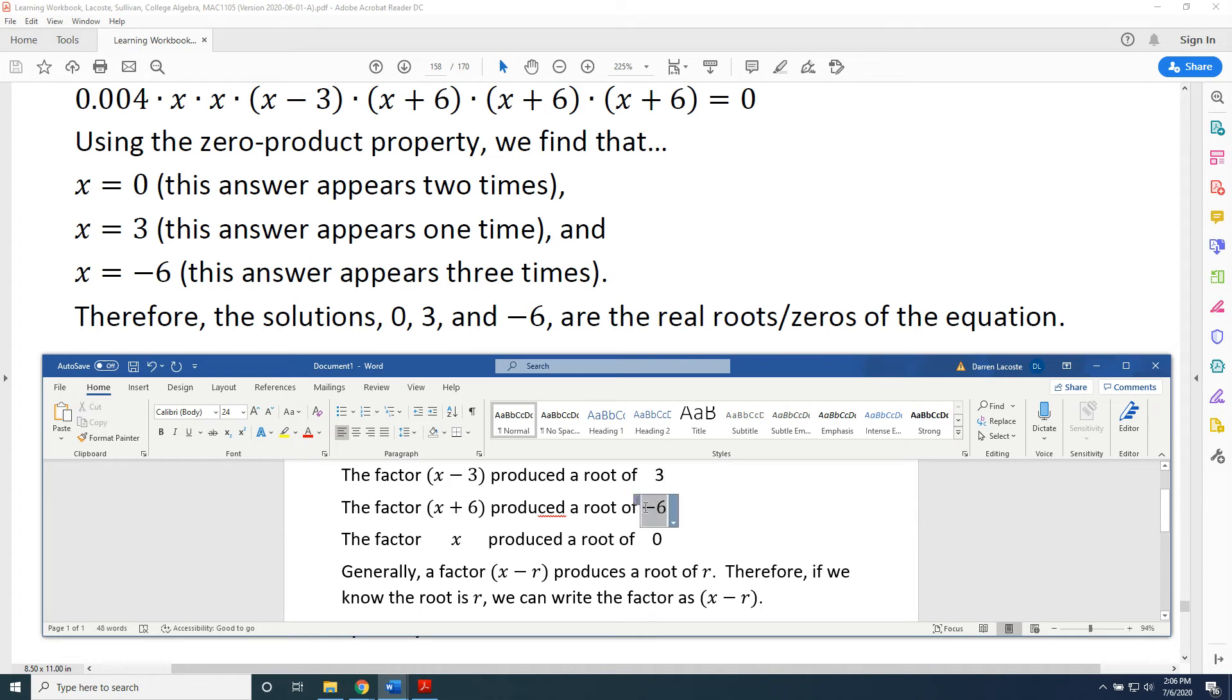Let's say we're told that the root is negative 6 and asked to create the factor. Negative 6 is r. So, the factor is x minus r, x minus negative 6. But subtracting a negative is adding, and so the factor is x plus 6.